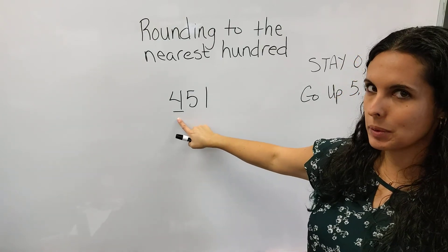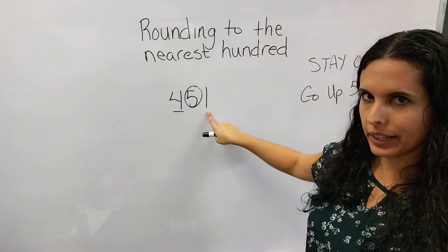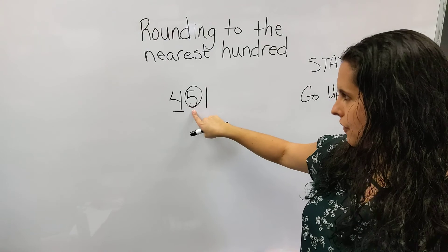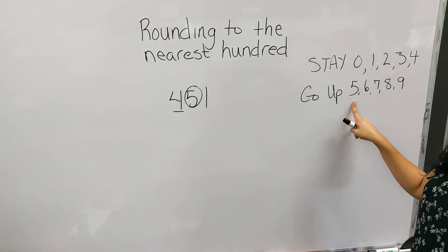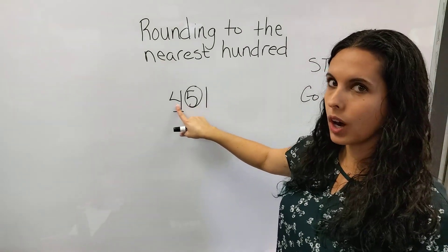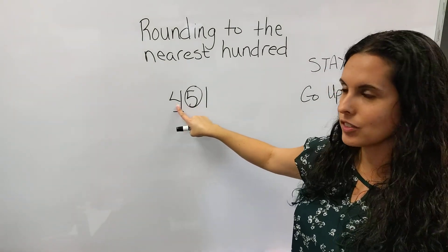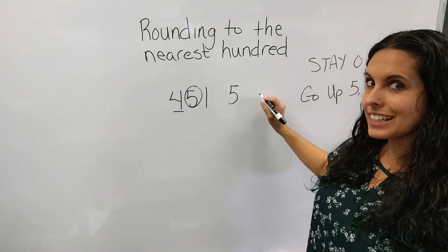We want to circle the number behind it. That's going to be our bossy number. We don't care about this number right now. So the 5, when we check our rounding rules, 5 says go up. So this 5 is going to tell the 4 to go up. The next counting number after 4 is 5. And these numbers here go to zeros.